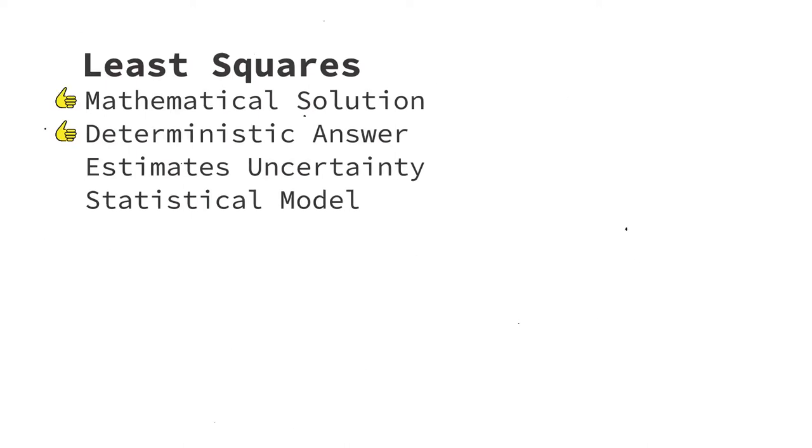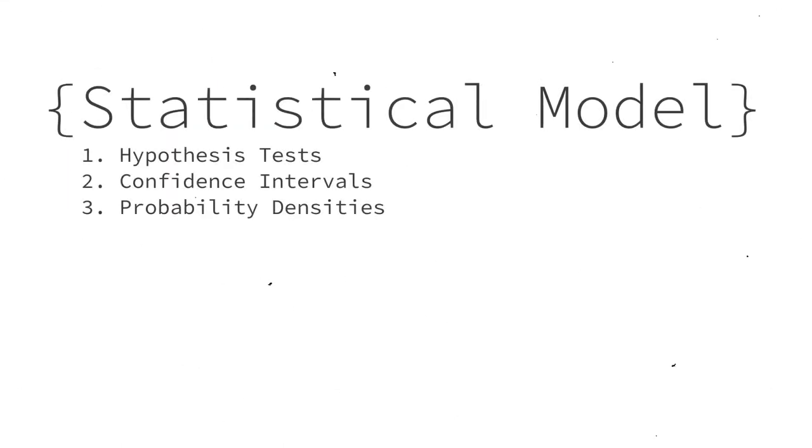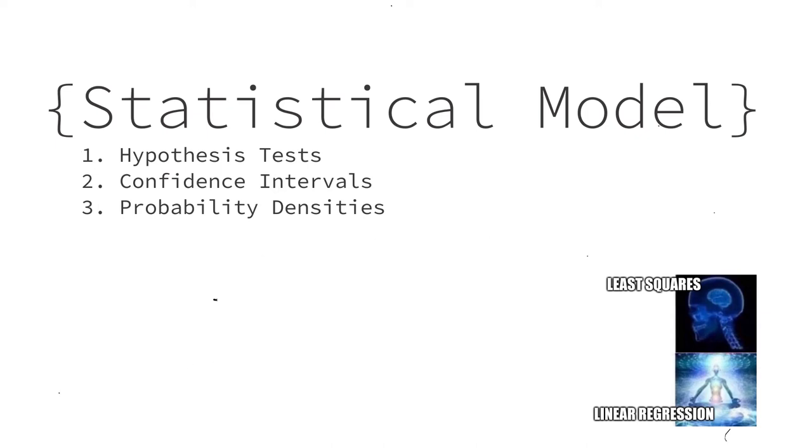Part of simple regression is about how to draw a line. But drawing a line has nothing to do with uncertainty. So least squares alone does not generate statistical estimates. Rather, it generates a deterministic answer. This is a mathematical solution, not a statistical estimate. There are no probability models needed to generate a least square solution. Why do we want a statistical model anyway? Without a probability model under the hood, you lose the ability to do hypothesis tests, generate confidence intervals, and probability densities. These things are possible with a simple linear regression model.